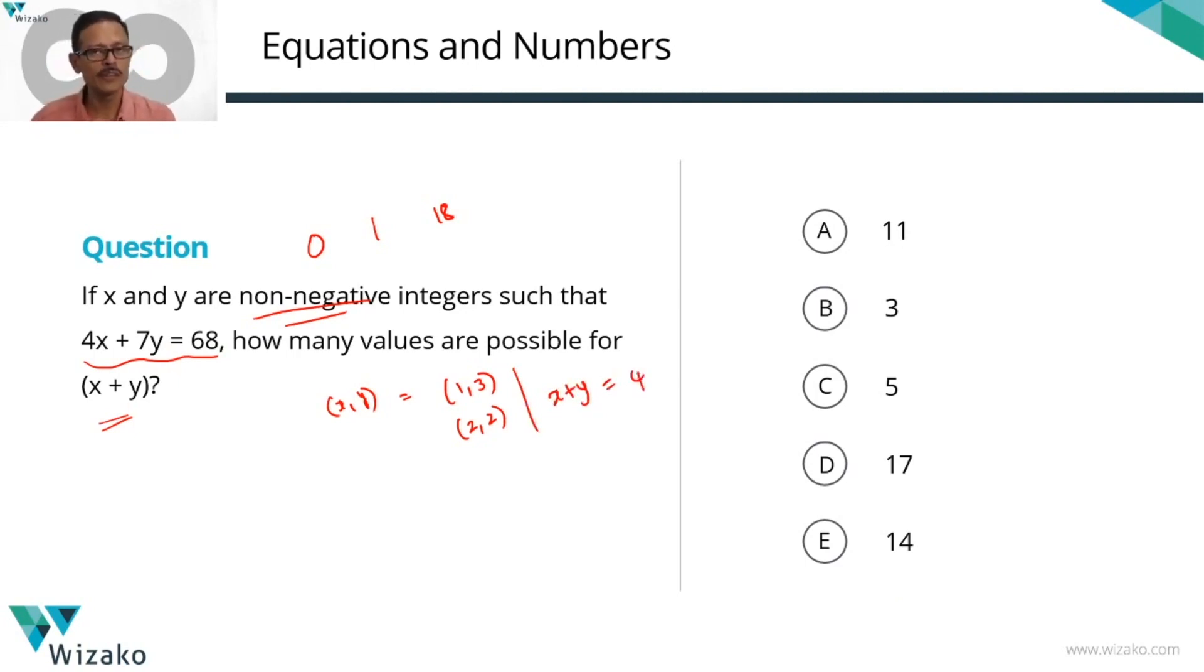This question is asking us to find out how many possible values exist for x plus y, not how many ordered pairs of values or how many values can x comma y take. Will it happen that way in this question? I'm not sure. We haven't solved it yet. But what I'm asking you to do is always keep track of what we are doing.